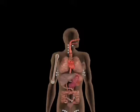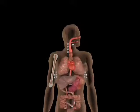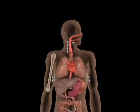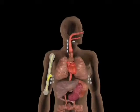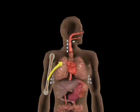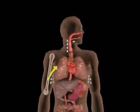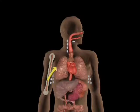Immature lymphocytes formed in the bone marrow are released into the circulatory system. Some of these, which are to become T-cells, must first undergo selection based on specificity and degree of response to antigens. This occurs within the thymus gland, located in the cardiothoracic cavity above the heart.